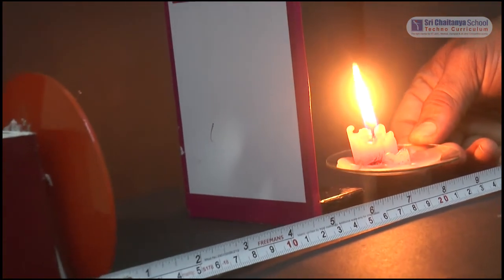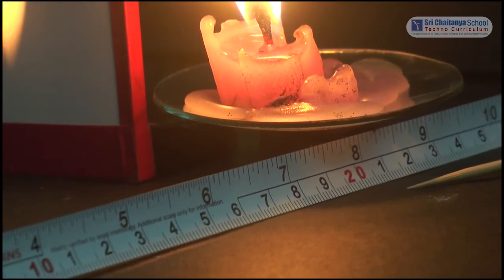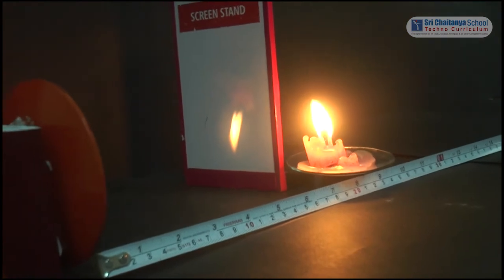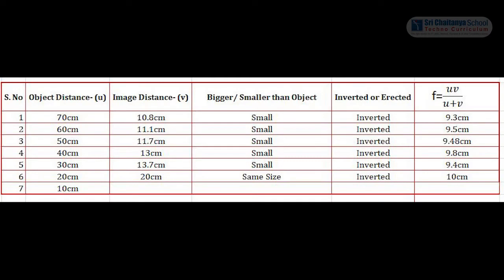Now place the object at 20 cm mark and again trace the image. By adjusting the screen, we will get an image on the screen. Here the image is formed at 20 cm. Object distance 20 cm, image distance 20 cm — we get the focal length as 10 cm. You might have observed that as the object comes closer and closer, the image size becomes bigger. When the object reached 20 cm, the image also reached 20 cm, so the image is almost equal in size to the object.